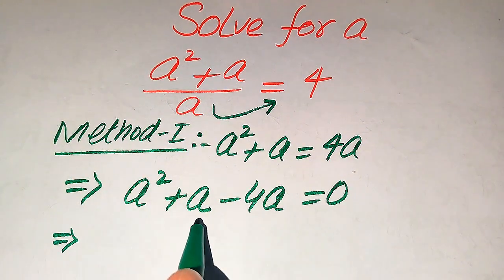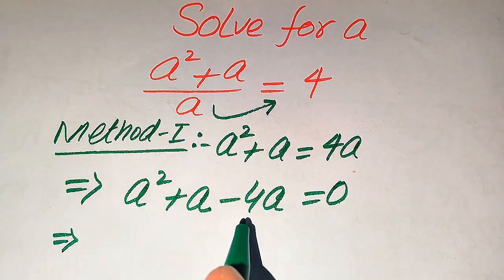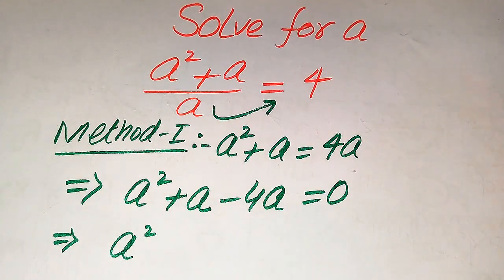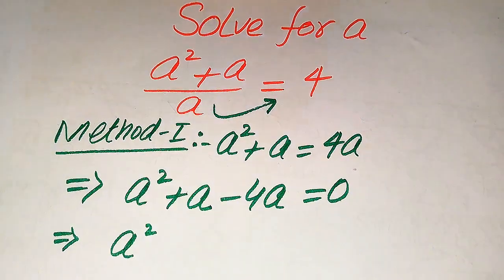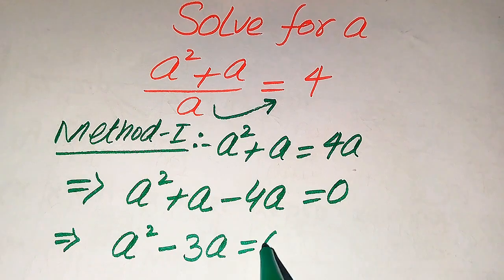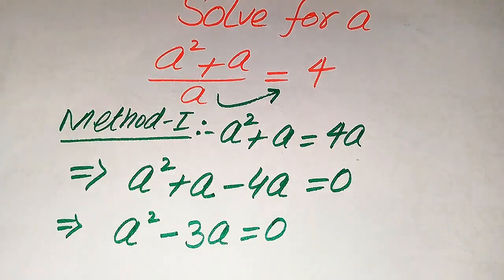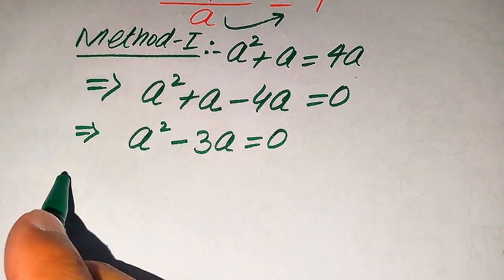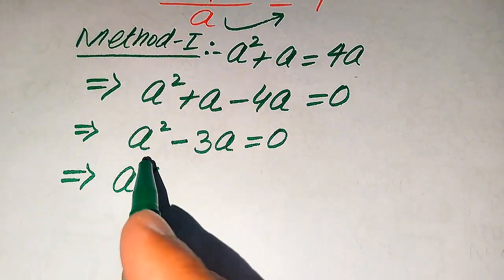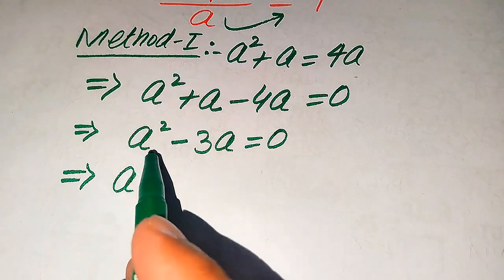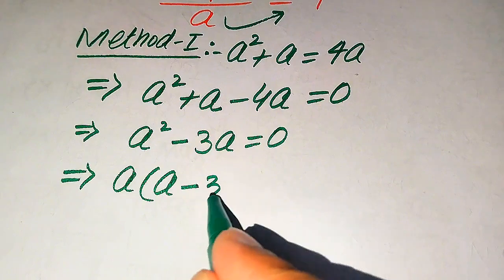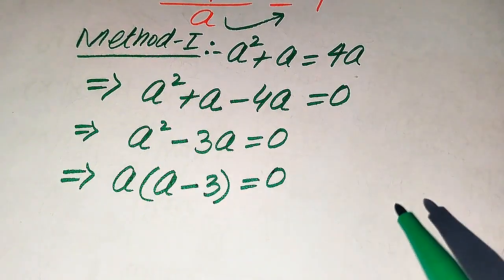We have a and negative 4a as like terms, so we subtract the coefficients. After subtraction we get a squared minus 3a equals 0. Both terms involve a, so we factor out a, giving us a times (a minus 3) equals 0.